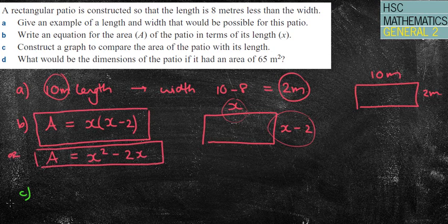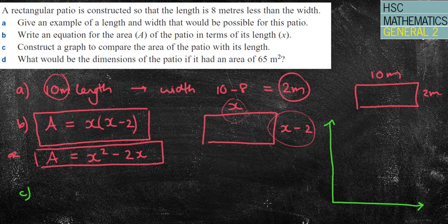Okay, next question, c. Construct a graph to compare the area of the patio with its length. I might try to do it over here. Now, notice I'm going to be using one quadrant only because I can't have a negative length. Now in this case, it doesn't tell us what to use it between. I'm going to use things like maybe 10, 20, 30, 40. They're my x values, and then I'm going to put my area here. Now, in this case, it isn't specific about what to use, so whatever you use will be fine. But I'm just mindful that the next question has an area of 65 square meters. So I want to make sure I've got 65 on here.